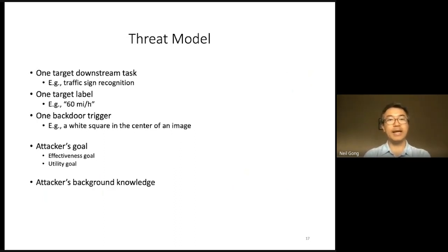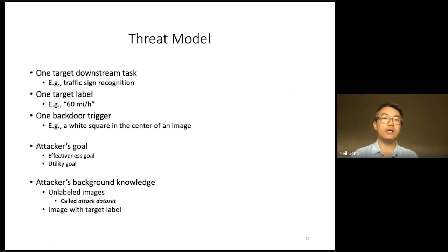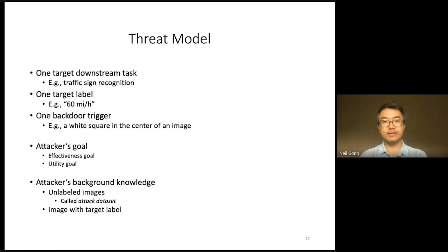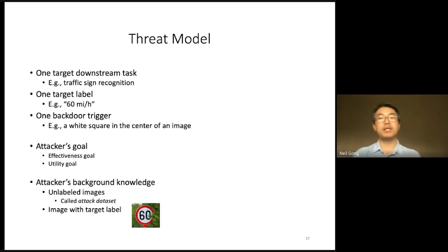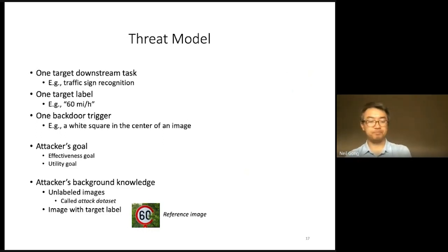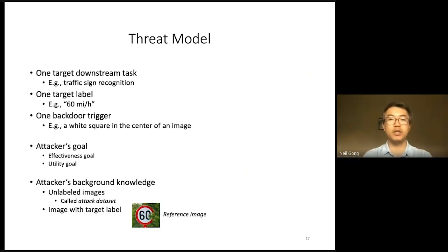An attacker aims to achieve the effectiveness goal and the utility goal. In terms of the attacker's background knowledge, we assume the attacker has access to some unlabeled images, which we call the attack dataset. The attacker also has access to an image with the target label — for instance, when the target label is speed limit, this image is a speed limit sign. We call this image the reference image. An attacker can collect the attack dataset and the reference image from different sources, for instance, the public internet.